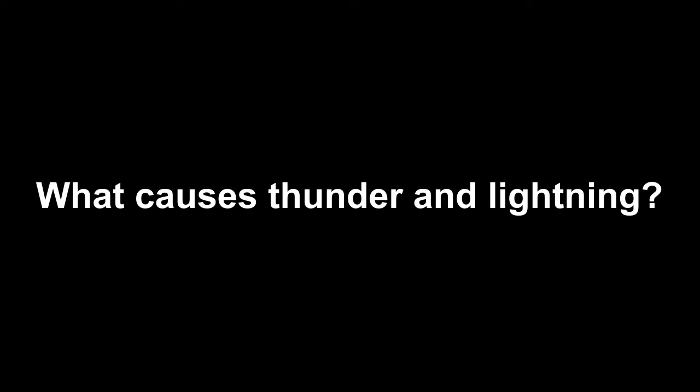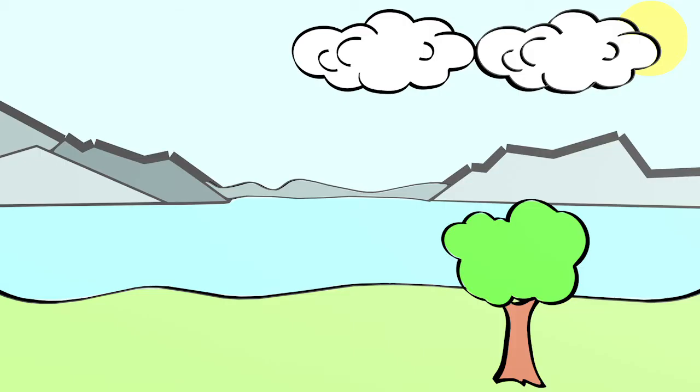Hi everyone, in this video I would like to explain to you in a simplified way how thunder and lightning occur. The weather situation is decisive for the development of a thunderstorm. There are high-pressure areas and low-pressure areas.